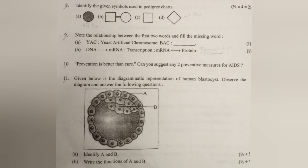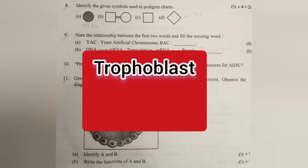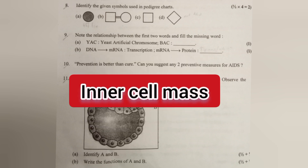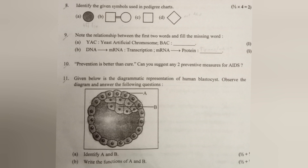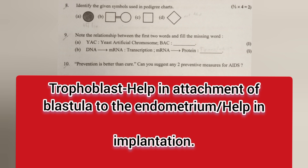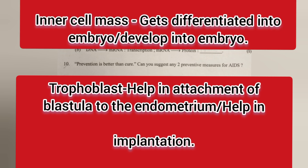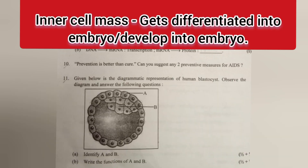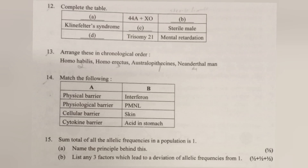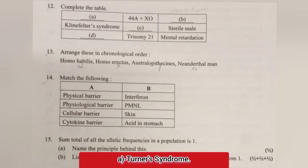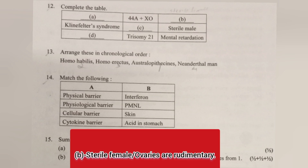Question 11: The diagram below is a diagrammatic representation of a human blastocyst. Observe the diagram and answer the following. A. Identify A and B — Answer: A: Trophoblast, B: Inner cell mass. B. State the function of A and B — Answer: Trophoblast helps in attachment of blastula to the endometrium or implantation; inner cell mass gets differentiated into the embryo.